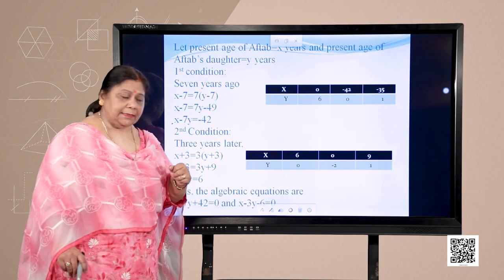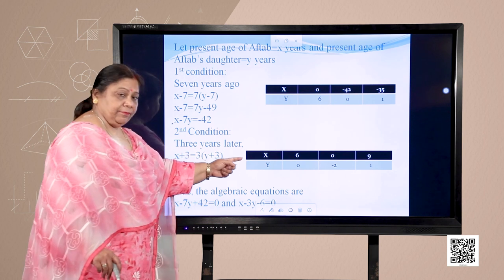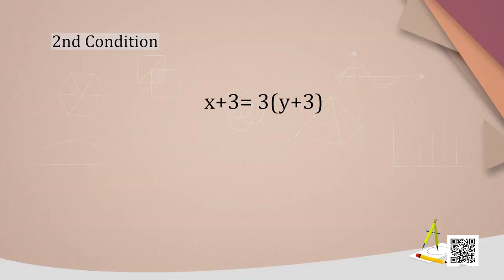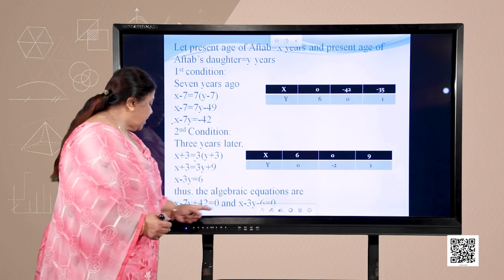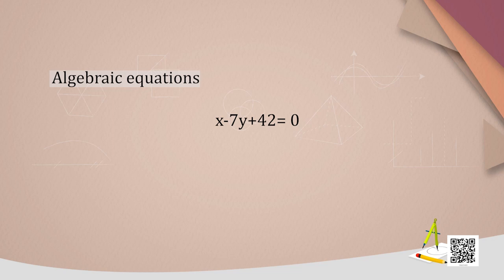The second condition says three years later: X + 3 = 3(Y + 3), which gives X + 3 = 3Y + 9, so X − 3Y = 6. Thus the algebraic equations are X − 7Y + 42 = 0 and X − 3Y − 6 = 0.